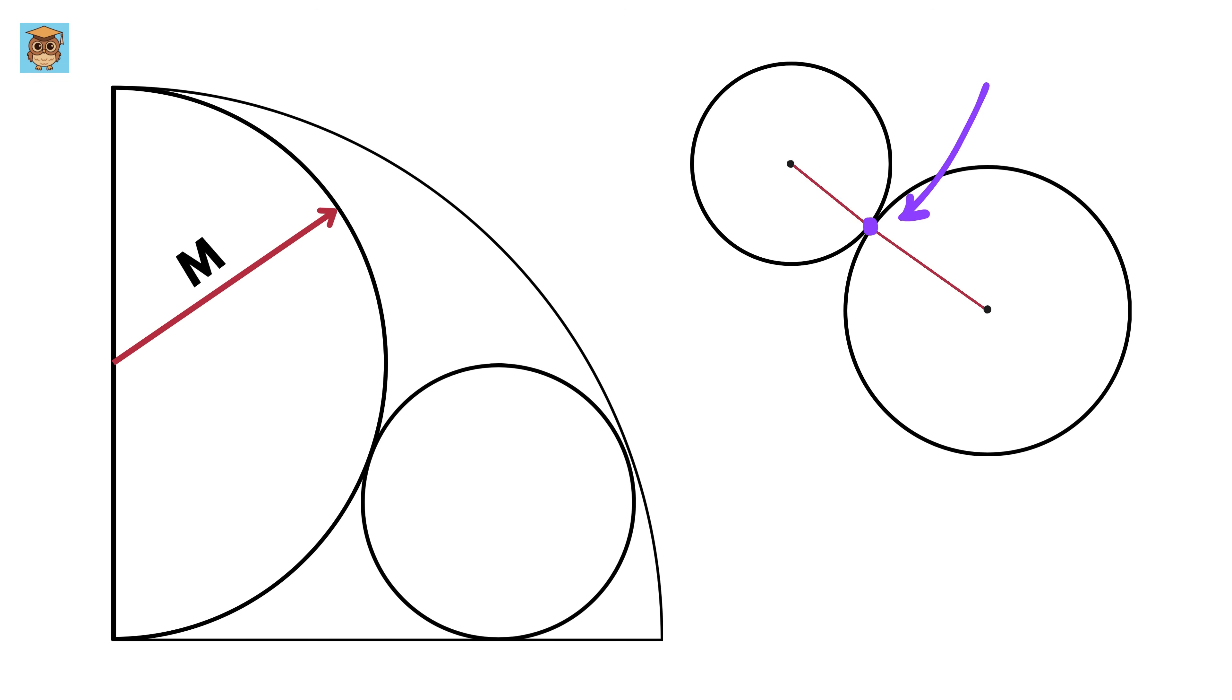This is because if we draw a tangent line like this passing through this common point, then this line will be perpendicular to this tangent as it is also the radius of this circle. Similarly, this line will also be perpendicular to this tangent line as it is also the radius of this circle. So this will be 90 plus 90 or 180 degrees, and hence all these three points are collinear. Amazing.